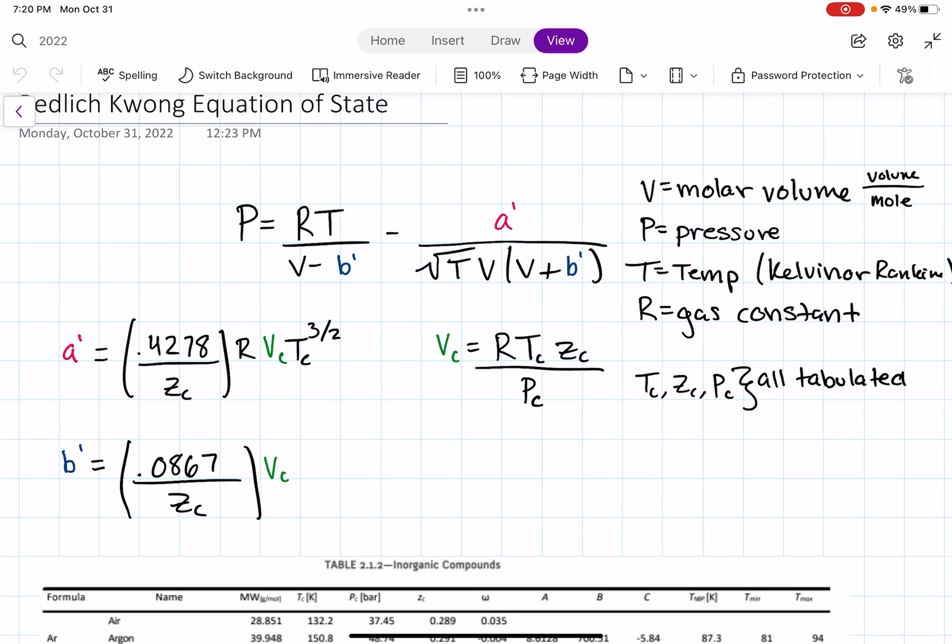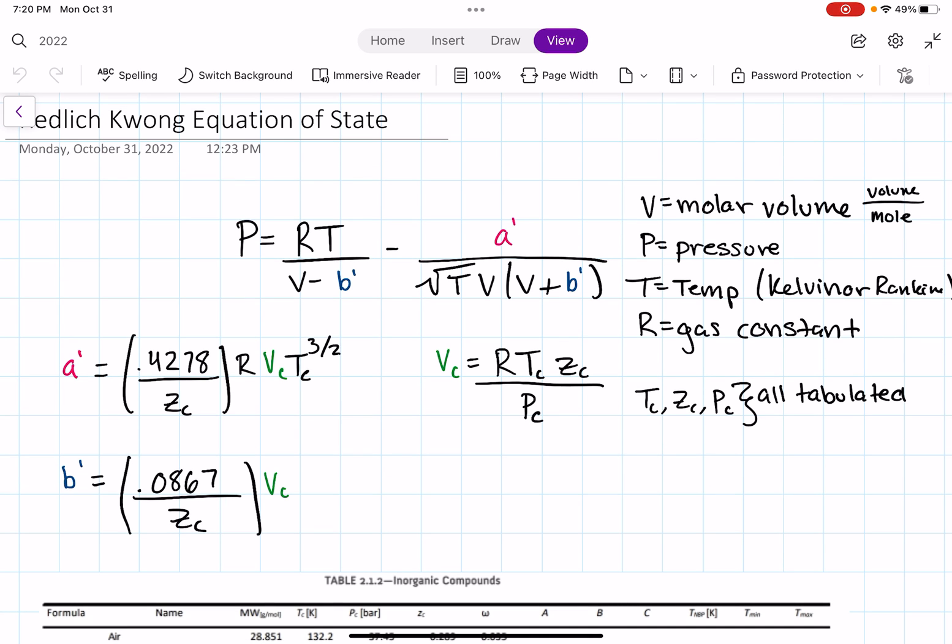Just like the Van der Waals equation of state, we have two variables here that we have formulas for as well: A' and B'. Those are the equations down there. And in order to get A' and B', we will also need critical volume. The critical volume equation is right there in green. In order to solve for the critical volume as well as A' and B', we're going to need your critical pressure, critical Z, and critical temperature.